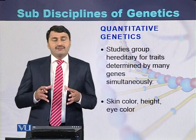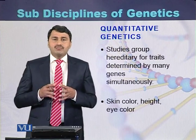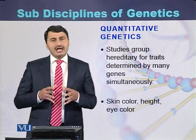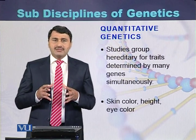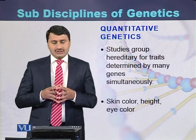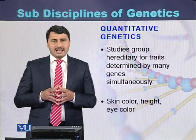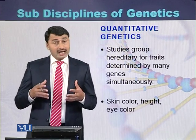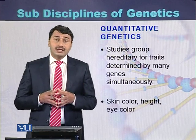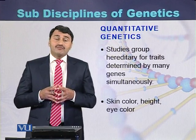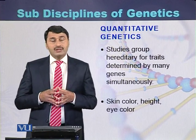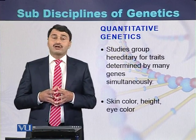Quantitative genetics deals with those characters which are determined by more than one gene simultaneously. This kind of genetics is called quantitative genetics. Examples include skin color, height of humans, and eye color of humans — there are many genes which control eye color, height, and skin color of humans.